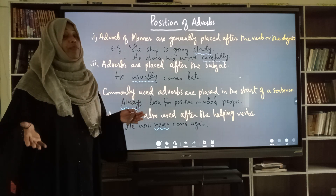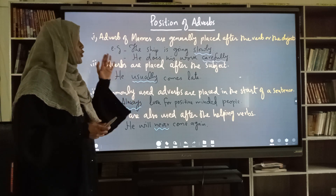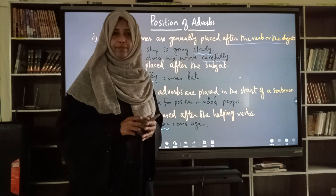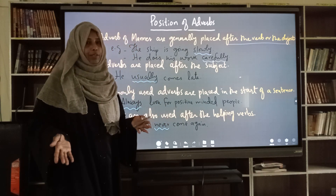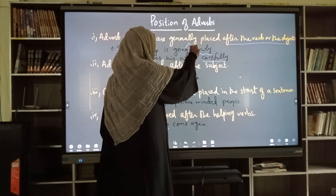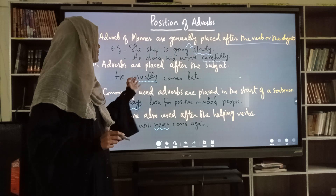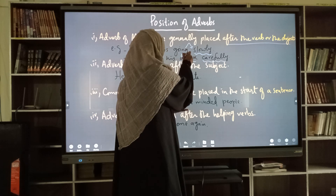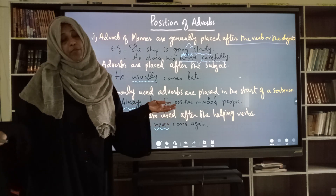The first one is adverb of manner. These particularly show you how an action has been done and are generally placed after the verb or the object — so there are two placements. For example, 'the ship is going slowly' — here the adverb is used after the verb. Another example where it is used after the object: 'he does his work carefully' — here 'work' is the object and after the object we have the adverb of manner.